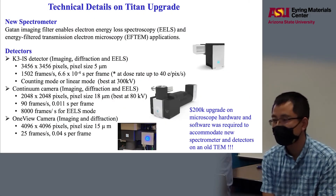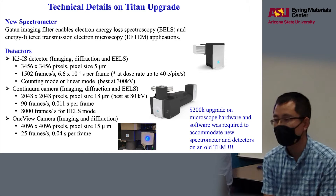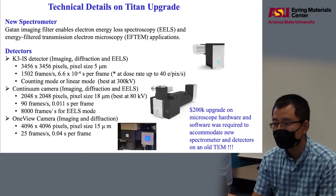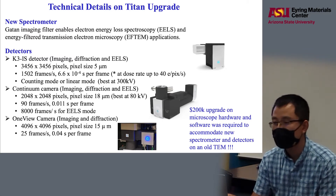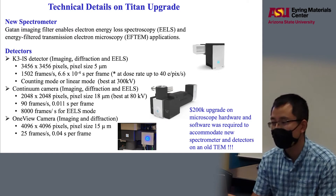Here are some technical details on the Titan upgrade. We have a new spectrometer — the Gatan imaging filter enables both EELS and also energy filter imaging. We have three new detectors. The major one is the Gatan K3S detector, which offers imaging, diffraction, and EELS with a large pixel array and a pixel size of 5 micrometers. It can read out very fast at 1,500 frames per second, but only at a low dose rate — at most 40 electrons per pixel per second.